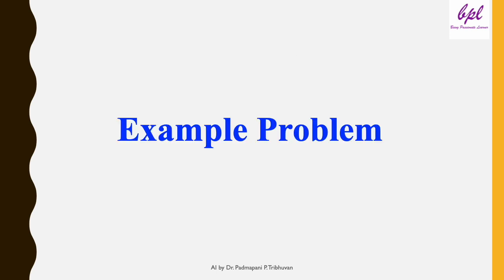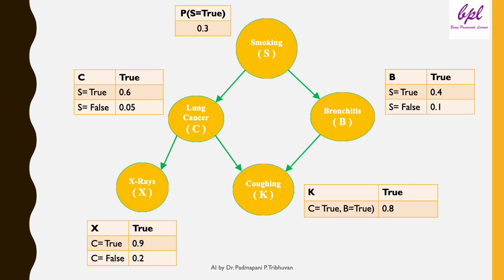Let's dive into an example to understand how Bayesian networks work in practice. We will explore a network with five nodes: Smoking, Lung Cancer, X-ray, Bronchitis, and Coughing. These nodes represent the relationships between smoking habits, the likelihood of lung cancer or bronchitis, and their symptoms like coughing and x-ray results. We will solve a problem stepwise using the law of total probability and conditional probability tables. Smoking affects both lung cancer and bronchitis. Lung cancer affects x-ray results and also contributes to coughing. Bronchitis also contributes to coughing. The relationships are represented by directed edges in the graph, and the dependencies between the variables are captured in conditional probability tables.